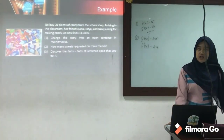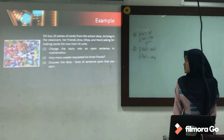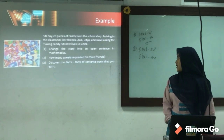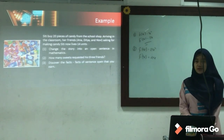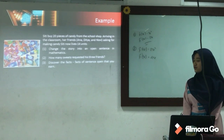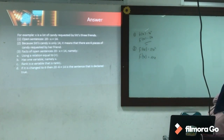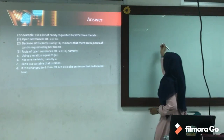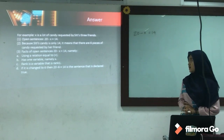Today we learn about linear equations in one variable. For example: C.T. buys 20 pieces of candy from the school shop. In the classroom, her friends Anna, Didya, and Ofni ask for some candy. C.T. now has 14 pieces left. Change the story into an open sentence in mathematics. How many candies did her three friends request? For example, X is the number of candies requested by C.T.'s friends. Open sentence: 20 minus X equals 14, because C.T.'s candy is only 14 left.